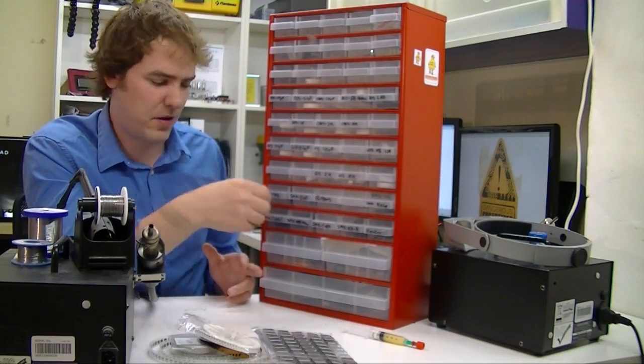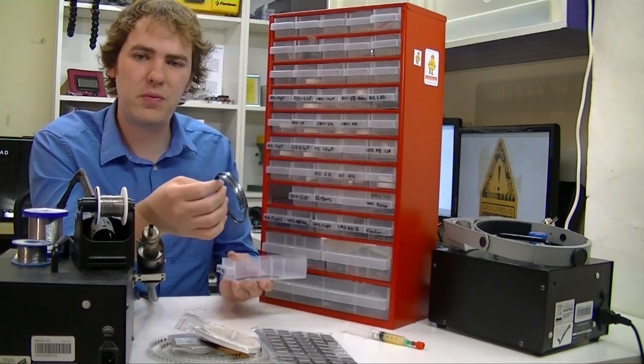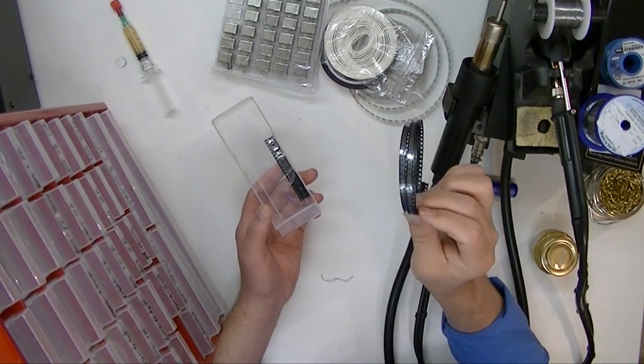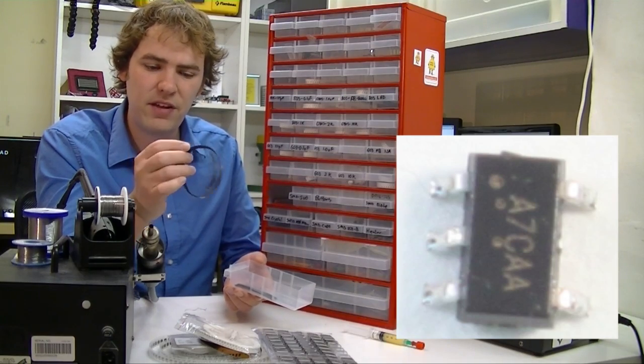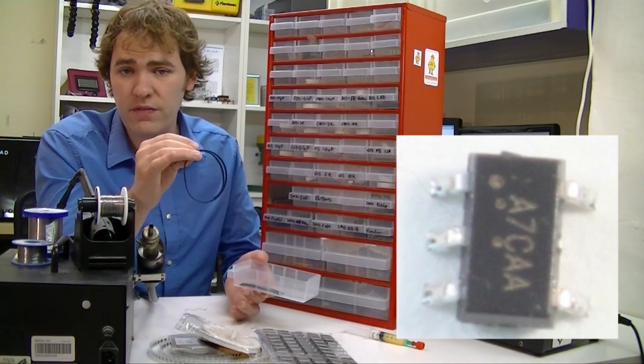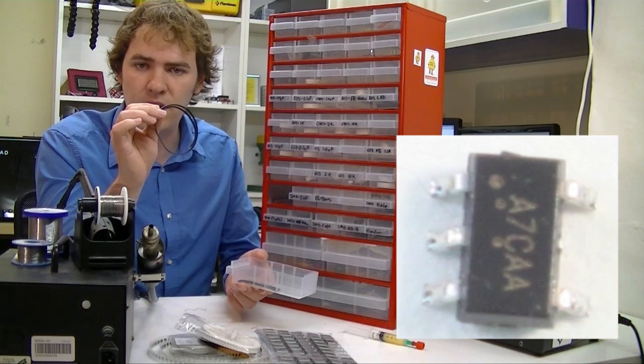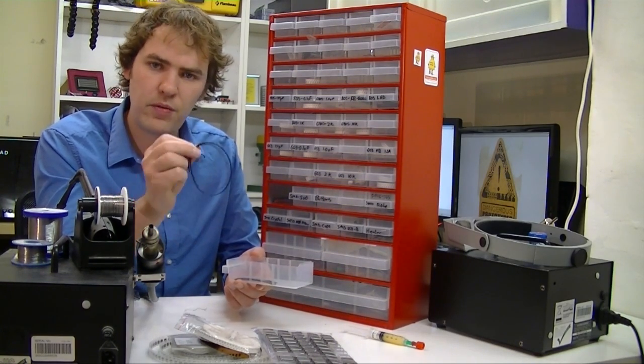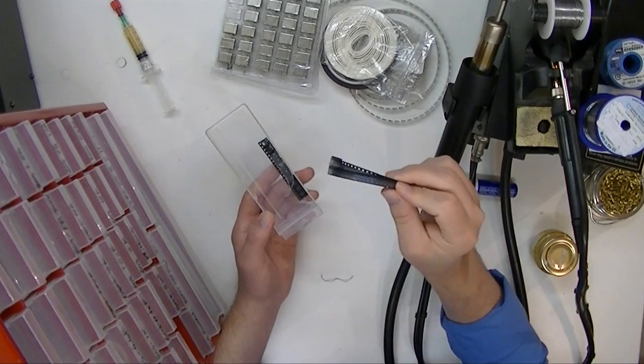The next two rows are some miscellaneous surface mount parts. Here we've got a drawer of 3.3 volt regulators in different package sizes. This is the one we most commonly use. It's SOT 23-5. That means it has 5 pins, and it's quite small. It's good for usually about 150 milliamps, and usually these have an enable switch so that you can turn it on or off from a microcontroller. We use these on the bus power to provide the switchable power supply.